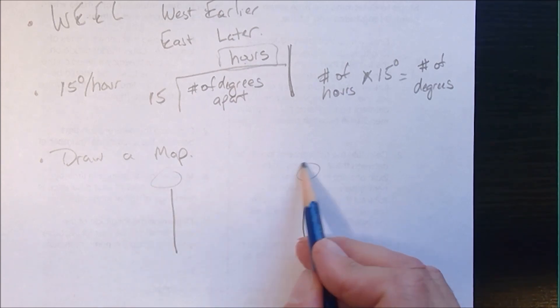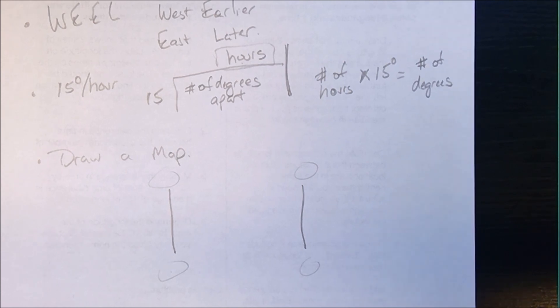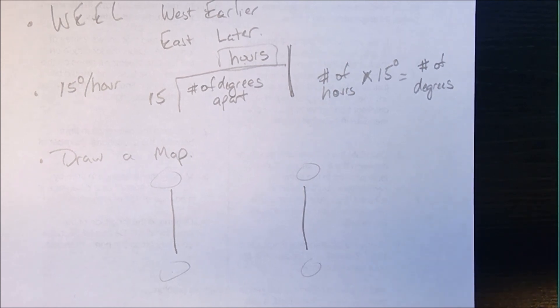You'll notice at the top and bottom there are four spaces. We're going to get two longitudes and two times by the time we're done. But they need to give you three out of the four pieces of information: either two longitudes in one time, or two times in one longitude. Let's go to the front and work through these problems.